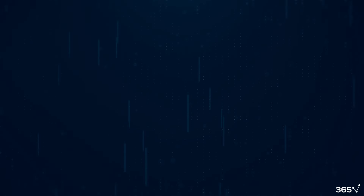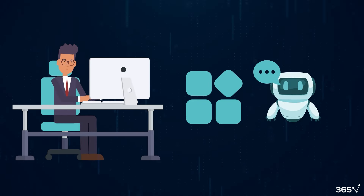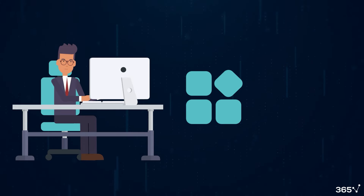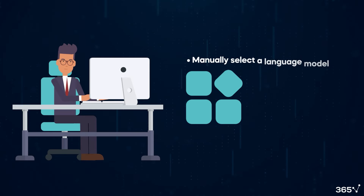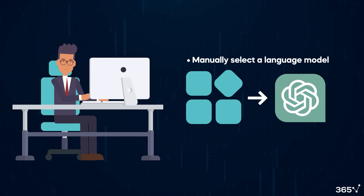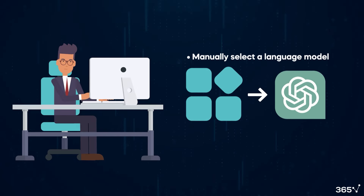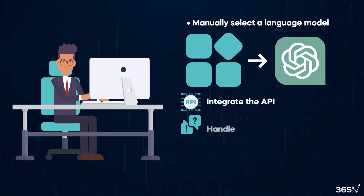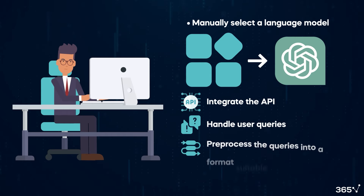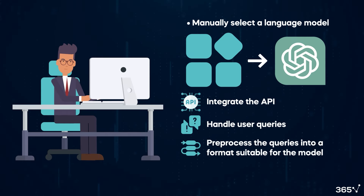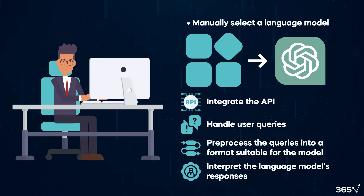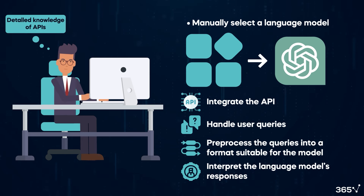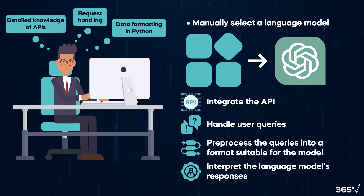Here's an example. Let's say you want to integrate an AI chatbot into your product. Without LangChain, you'd manually select a language model like OpenAI's GPT. Next, you'd need to integrate the API, handle user queries, pre-process these into a format suitable for the model, and finally interpret the language model's responses to provide clear answers to the user. This process requires detailed knowledge of APIs, request handling, and data formatting in Python.